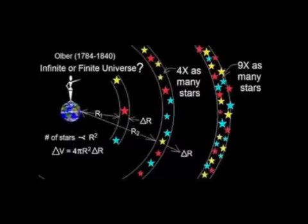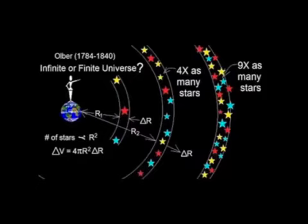Proof 17: Olber's Paradox states that if there were billions of stars, which are suns, the night sky would be filled completely with light. As Edgar Allan Poe said, were the succession of stars endless, then the background of the sky would present us a uniform luminosity, since there could exist absolutely no point in all that background at which would not exist a star. In fact, Olber's Paradox is no more a paradox than Airy's experiment was a failure — both are actually excellent refutations of the heliocentric spinning-ball Earth model.